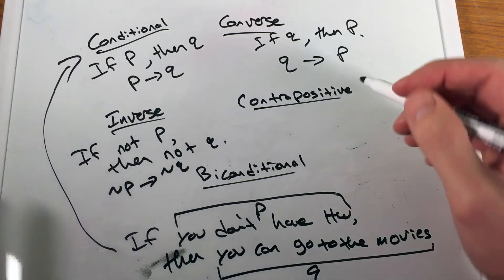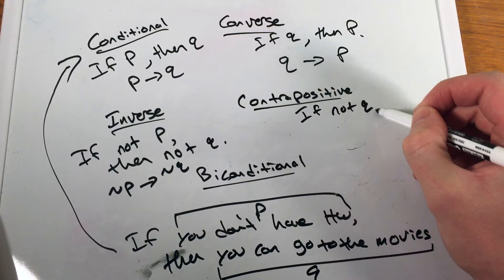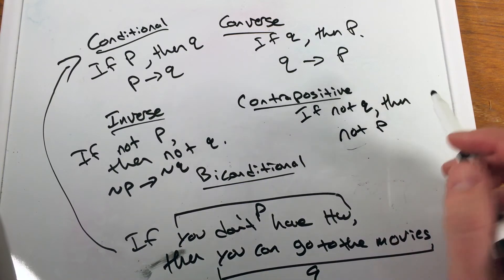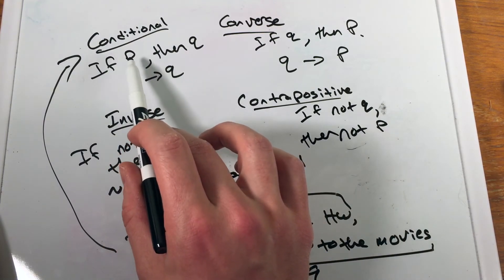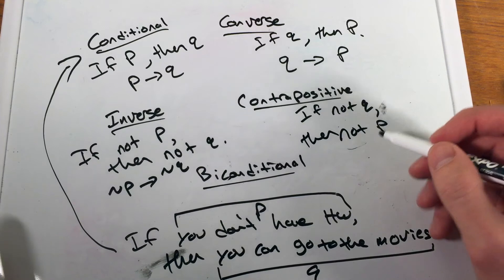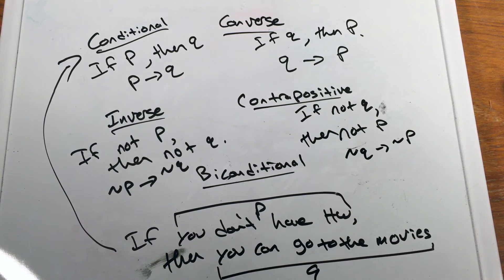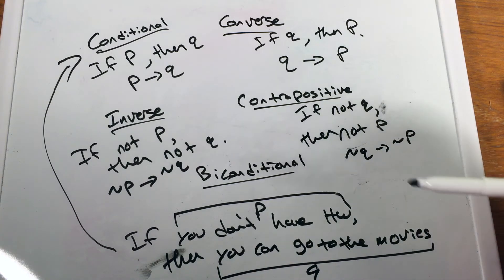In mathematics, two wrongs make a right. Now we get to the contrapositive, which is 'if not Q, then not P.' We flip it and negate the original conditional statement. So that would look like: if you cannot go to the movies, then you do have homework. We're negating both and flipping both.